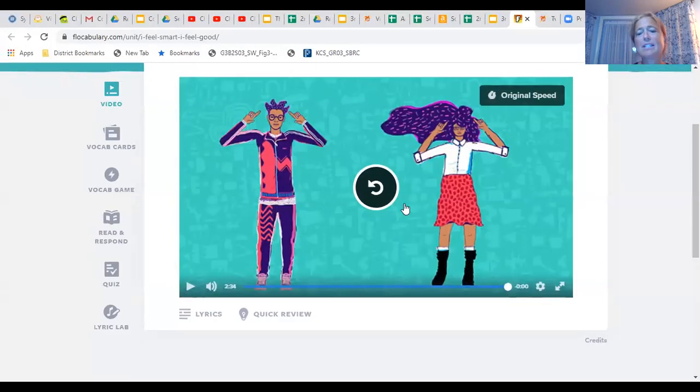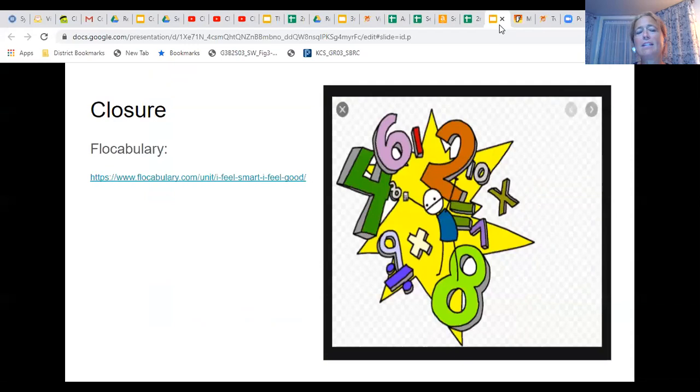Okay, so like they said in the video, anything times zero is zero. So no matter what the number is, if you're multiplying it times zero, it's zero. And anything times one is that number. So six times one is six, seven times one is seven, a million times one is a million. Okay, so that's all I have for you today, my friends. Make sure you're getting your work done and have a great day.